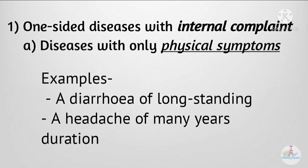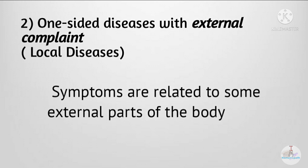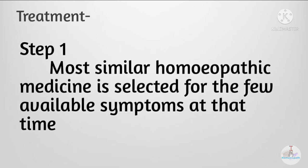Coming back to our topic: in one-sided diseases with internal complaint, for diseases with only physical symptoms, the characteristic or chief symptoms are related to physical complaints only. For example, a diarrhea of long standing or a headache of many years' duration — in these examples there are no mental symptoms along with it. For diseases with only mental symptoms, the principal symptoms are related to mental complaints only, for example mania and insanity. In the second type, one-sided diseases with external complaint, the principal symptoms are related to some external parts of the body — that's why this type is also called local diseases.